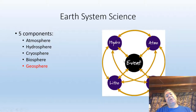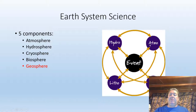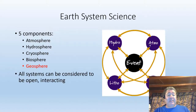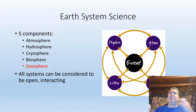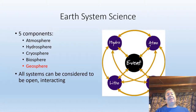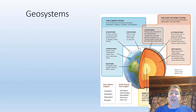Any event that happens in the hydrosphere is going to affect climate and atmosphere — they're all interrelated, all connected, all affecting each other. We call this open and interacting: they're open to external inputs and sources, and they're all interacting with each other in a constant state of change.